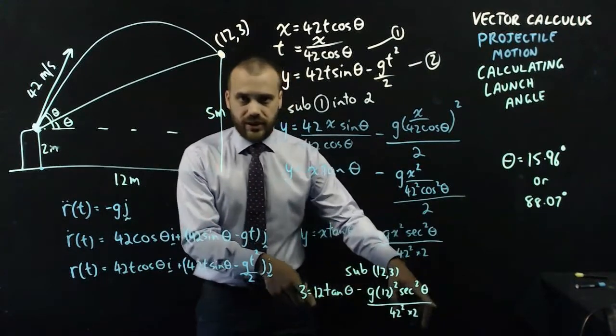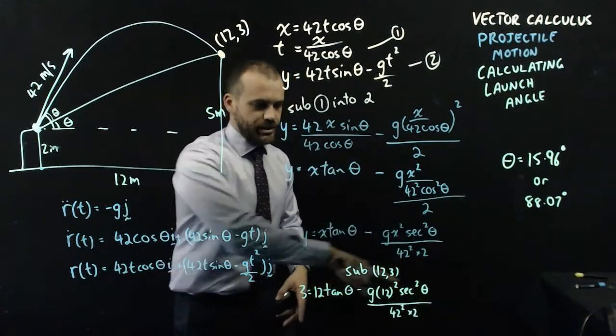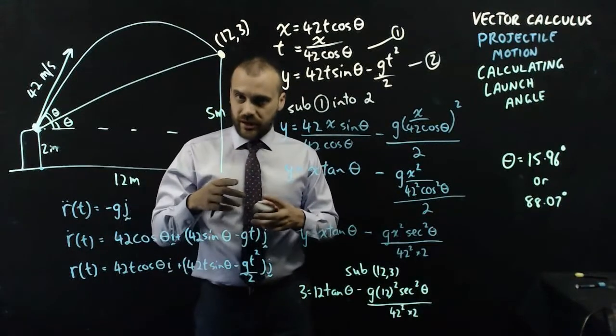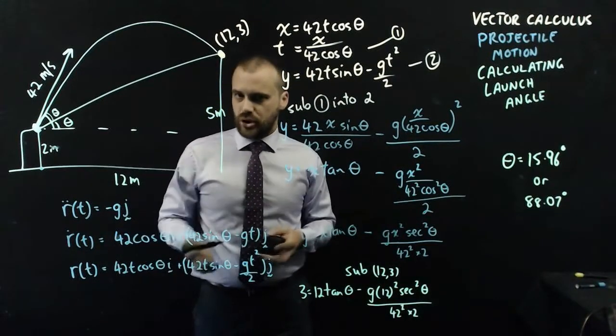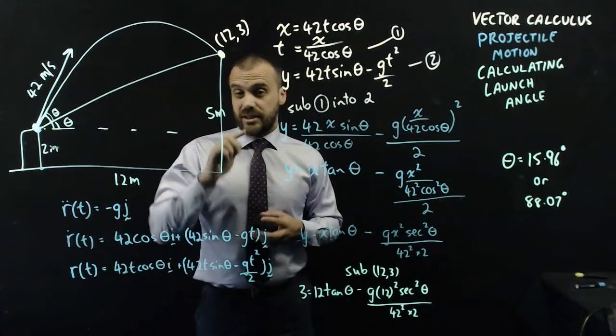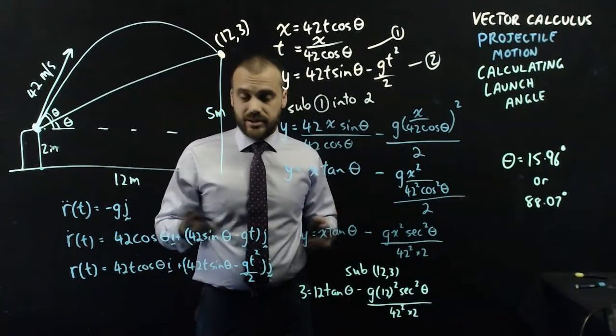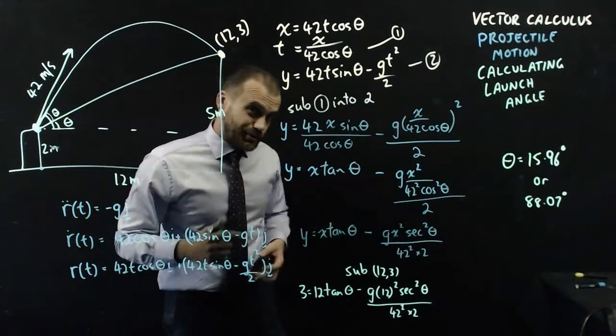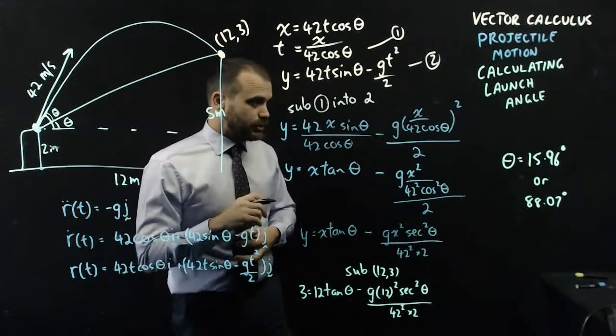There is another way that you can type this into your calculator. You can sketch y equals 3 and y equals all of that garbage, replacing those with x's. And that'll give you two graphs. And then it's up to you to interpret where those graphs are intersecting. And they'll intersect at 15.96 and 88.07, which are the answers that we're looking for.